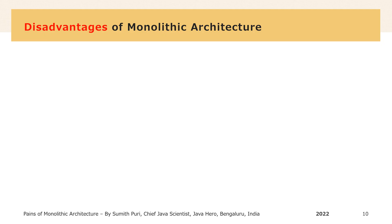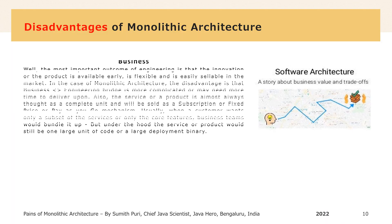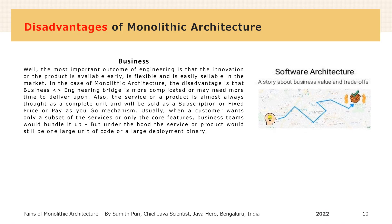The most important outcome of engineering is that the innovation, product or product feature is made available in the market early, is flexible and is easily sellable. In the case of monolithic architecture, the disadvantage is that the business-to-engineering bridge is more complicated or may need more time to deliver. The service or product is almost always thought of as a complete unit and will be sold as a subscription, fixed price, or pay-as-you-go mechanism. When a customer wants only a subset of services, business teams bundle it up, but under the hood it may still be one large unit of code or deployment binary.